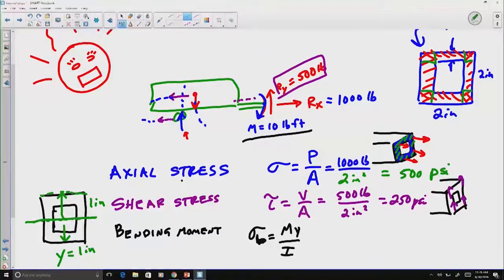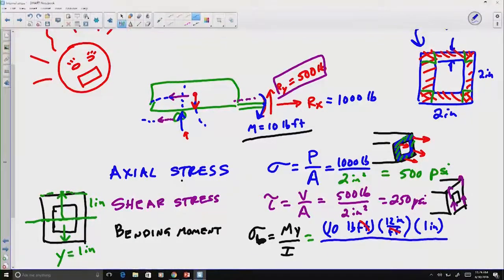We know what our moment is. Our moment is 10 pound feet. Notice everything else is in inches, so we're going to have to do a conversion of 12 inches per foot. So we can cancel out feet and get an answer in inches here. And then we have a Y of one inch. But now we also need that value I, that moment of inertia.